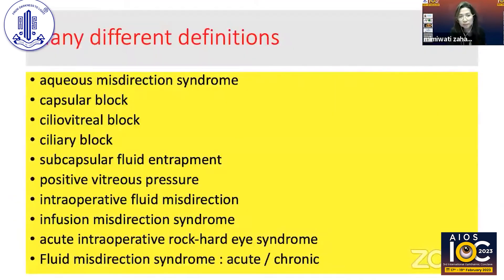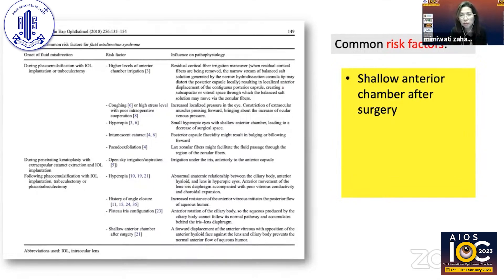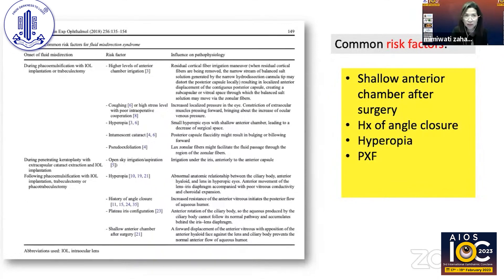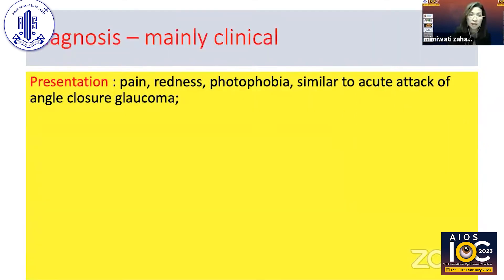Common risk factors include shallowing of the anterior chamber after surgery. It often occurs in small eyes — those with a history of angle closure and hyperopia. It also occurs in pseudoexfoliation cases where the zonules are lax and the lens can move forward easily, and in cases with significant intraoperative stress such as uncooperative patients who perform the Valsalva maneuver.